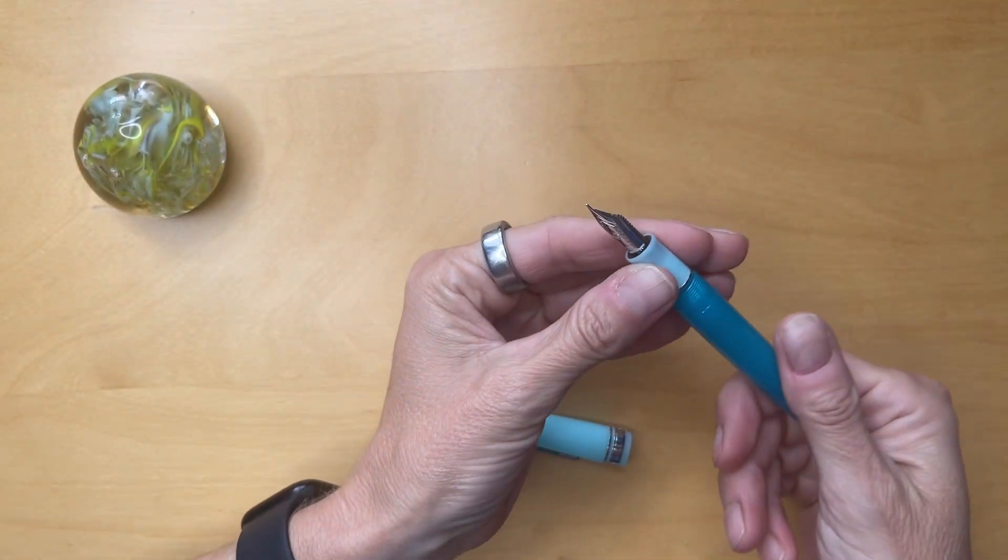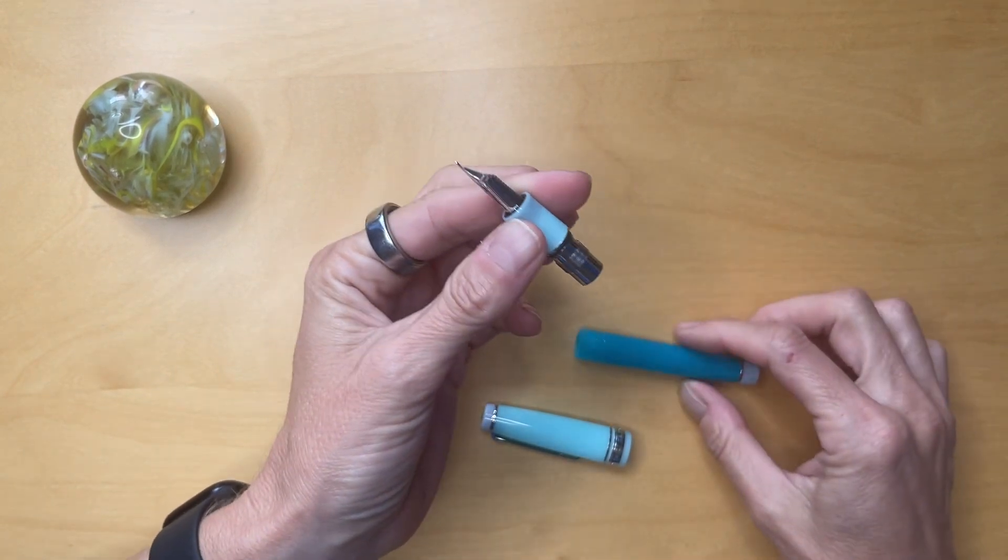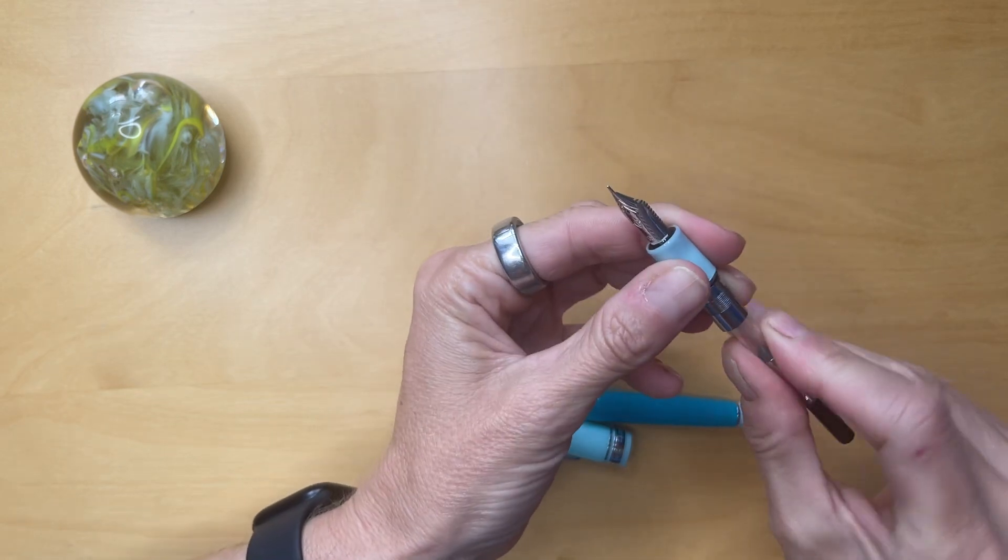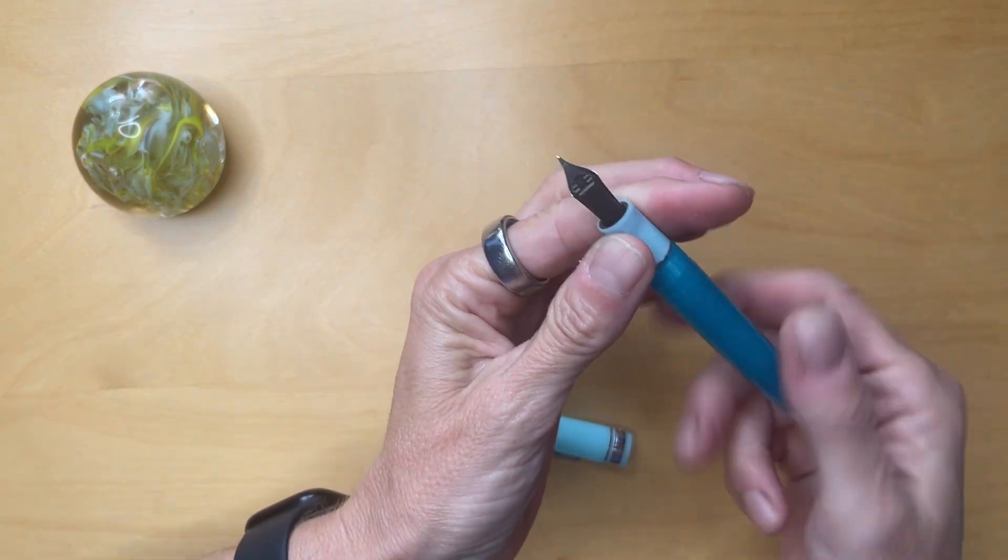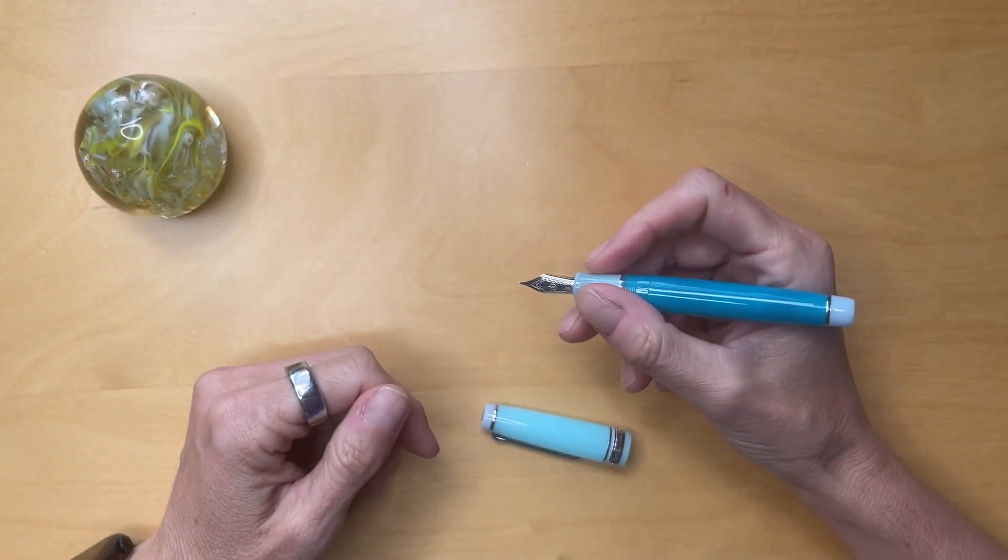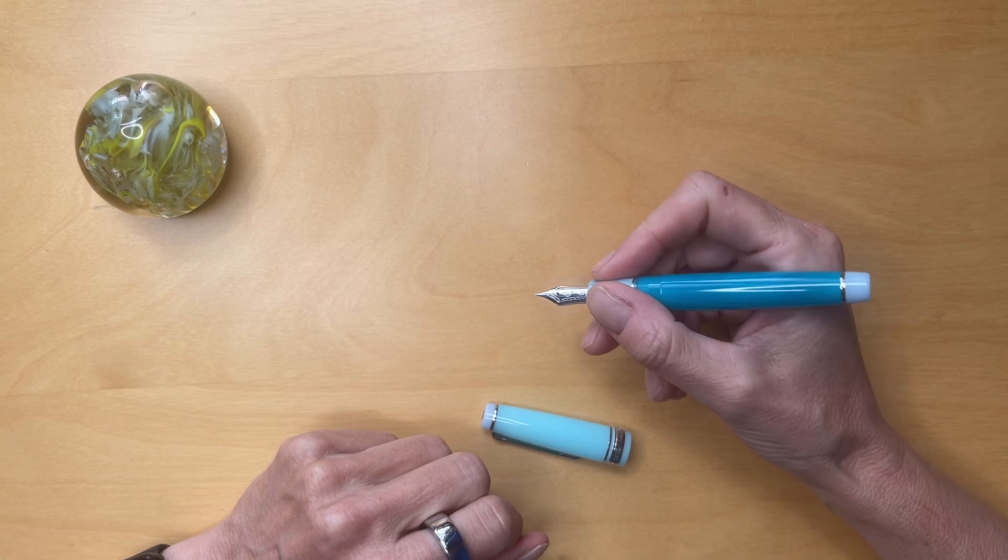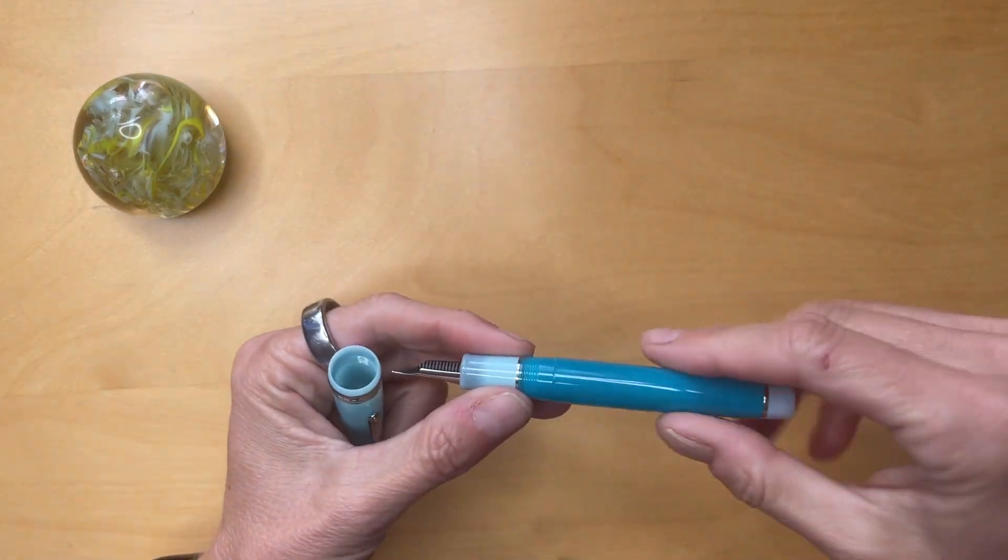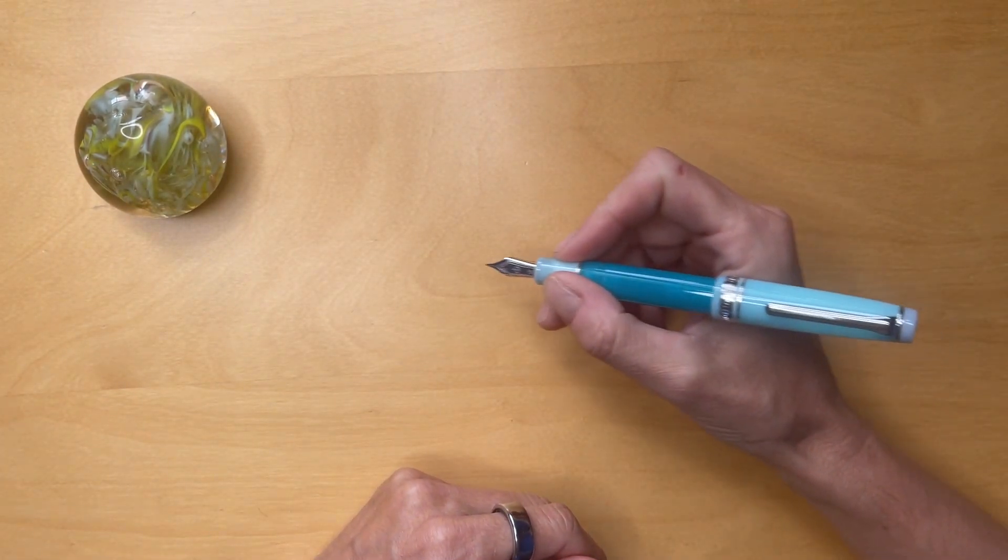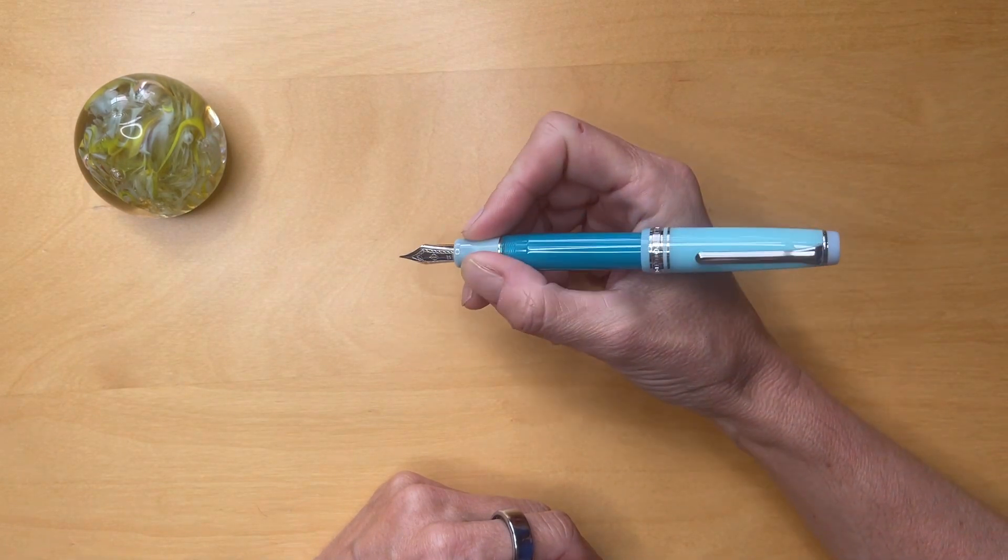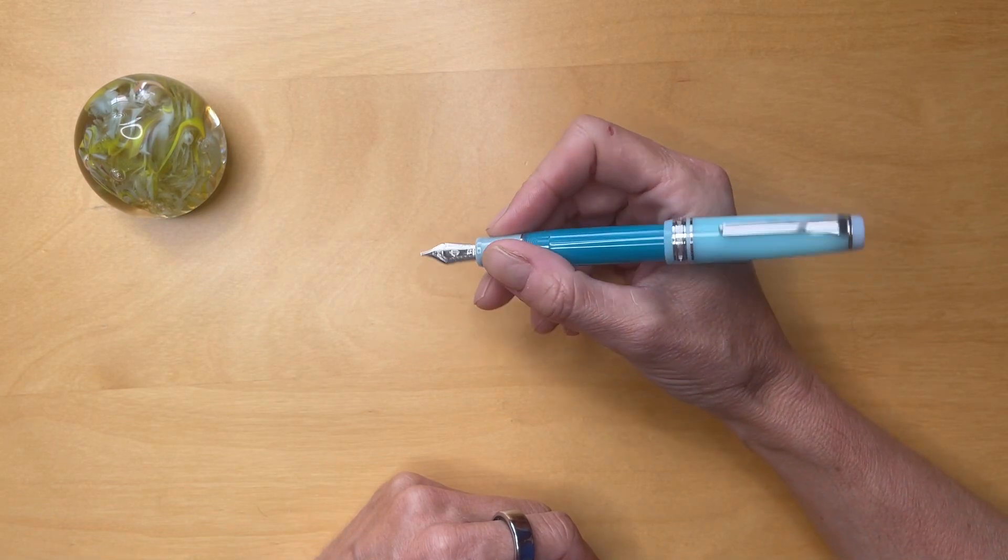And then, as we said, it's a cartridge converter. So quite many turns to open this. Put the converter in. And then we have our pen. It's quite many turns to turn. And let's see. So it feels light, as I already said. It feels very, very nice, though. I love it. I mean, it's so smooth. You can absolutely post it. And it actually feels nice posted. It's not because the cap is so light, it doesn't actually feel too heavy. So this might actually be one that I might write with posted, even though I usually don't write posted.